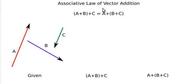In this video, I will prove the associative law of vector addition graphically. First, what is the associative law? Associative law is regarding the addition of quantities. It says that if you add quantities, it doesn't matter in which order you add them. You can add any quantities first and then add the remaining quantities to the resultant.